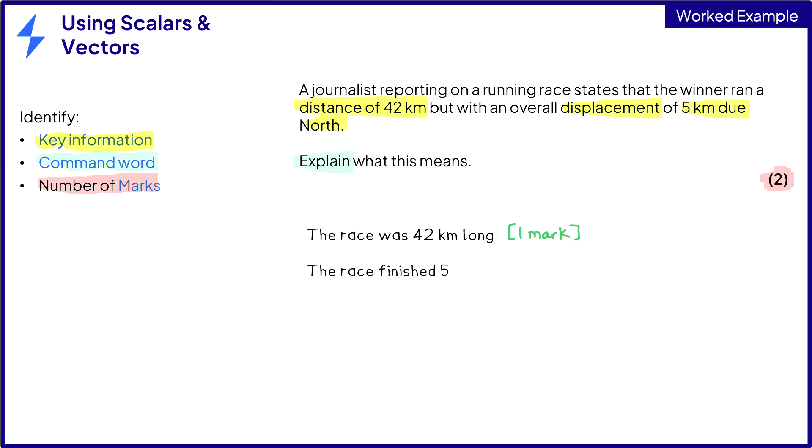And the overall displacement of the race was 5 kilometers due north, which means the race finished 5 kilometers away from where it started and this was exactly north of the starting point. This is for the second mark. Remember, the number of marks is the number of points you need to make in your written answer.